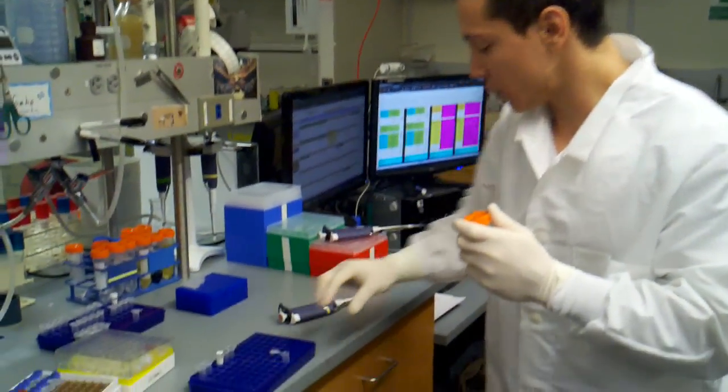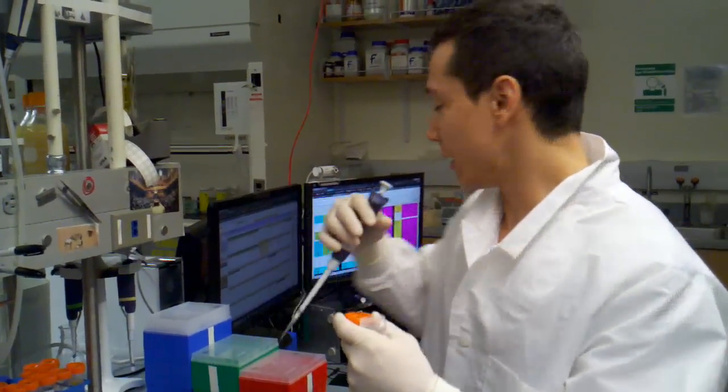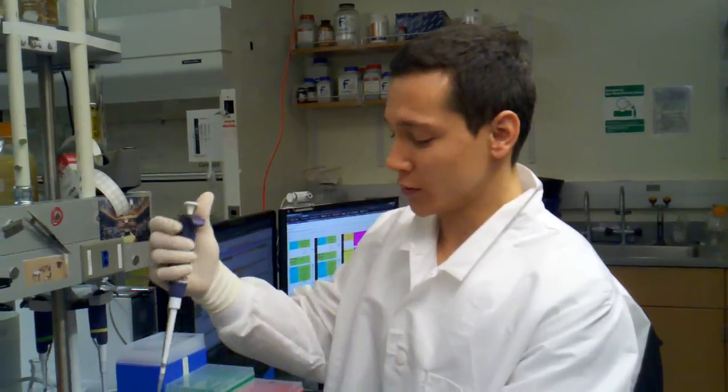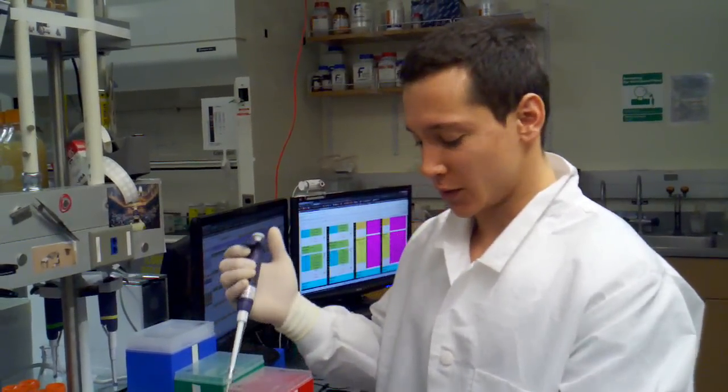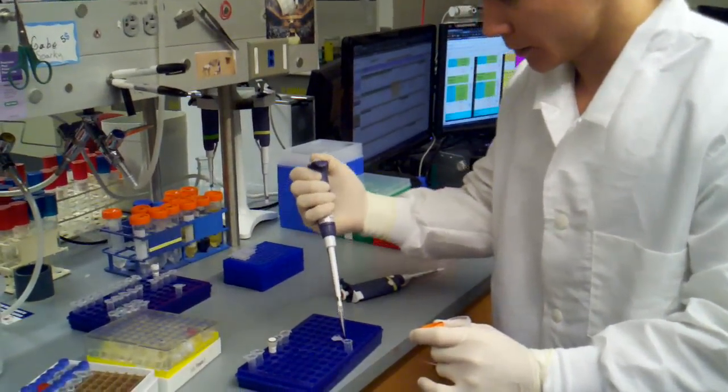So when we're doing more than one reaction, we use this master mix technique. We can use that calculator. It's just going to quadruple the volume, or double the volume, or however many reactions we want to use. We can just make them all in one tube, and then allocate them out individually, and it just saves a whole lot of pipetting and effort.